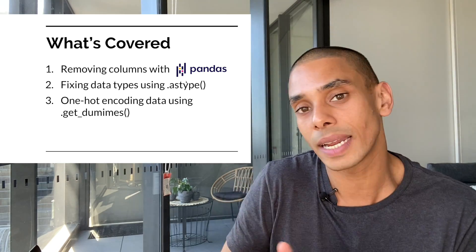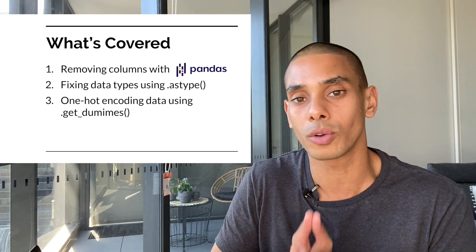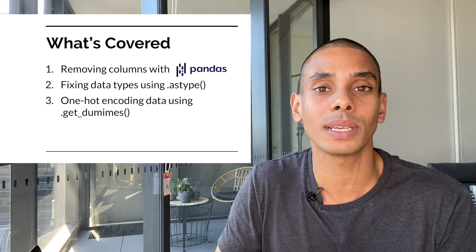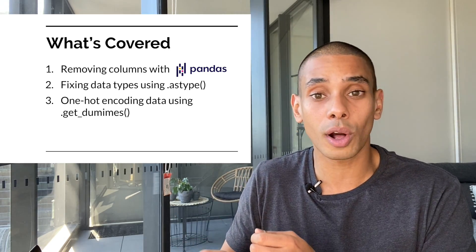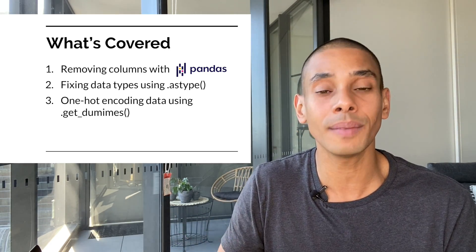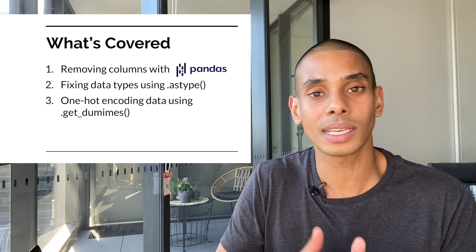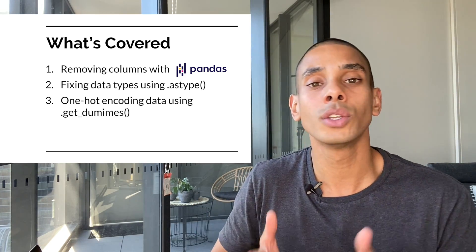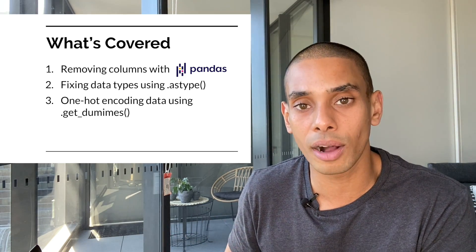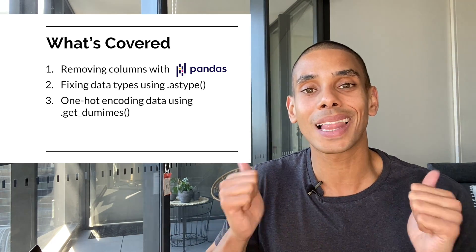Welcome to part two in the series on Python machine learning. In today's video we're going to be covering data preparation with pandas. This is an essential component before you get to the modeling stage of machine learning. We're going to cover the core components of data preparation: how to drop columns using pandas, how to convert columns to the correct data type using the astype command, and one-hot encoding to convert data to a format readable by most machine learning algorithms.